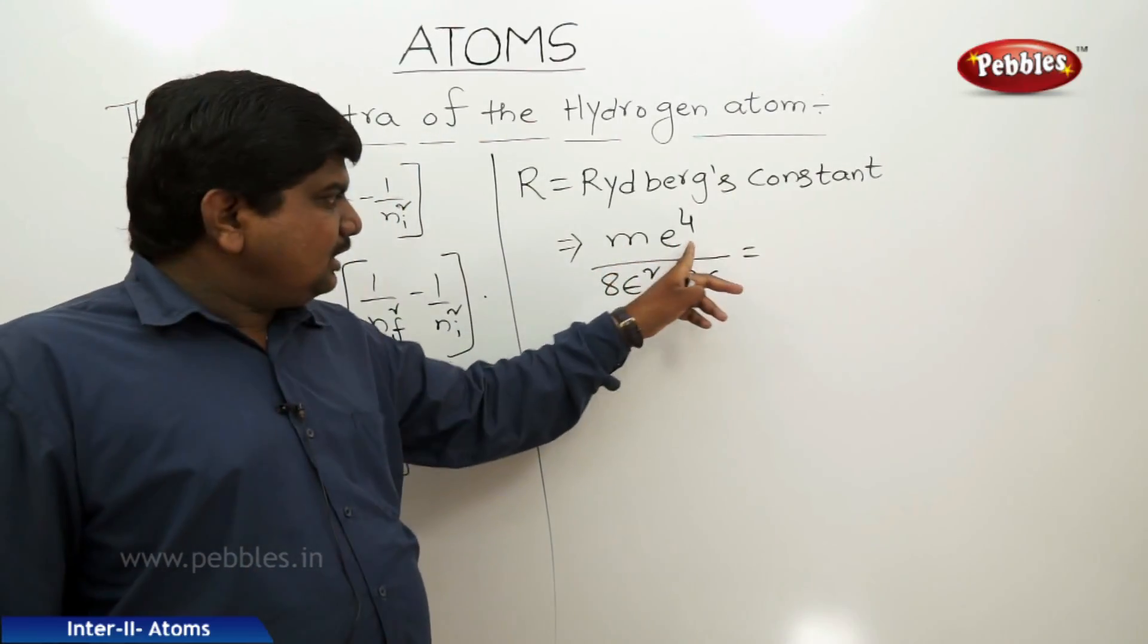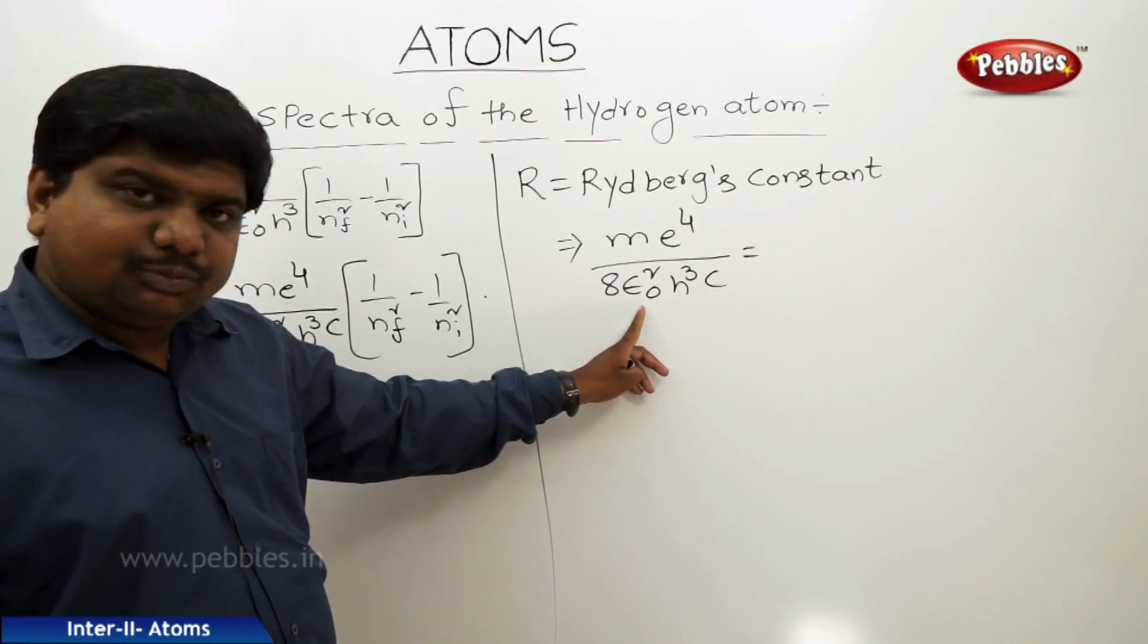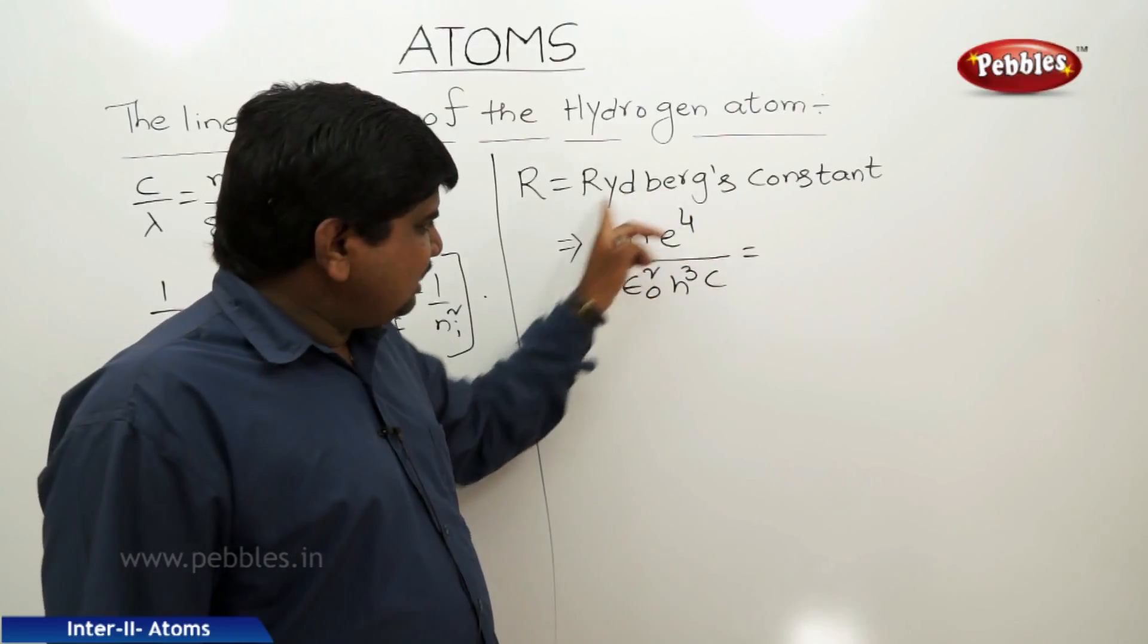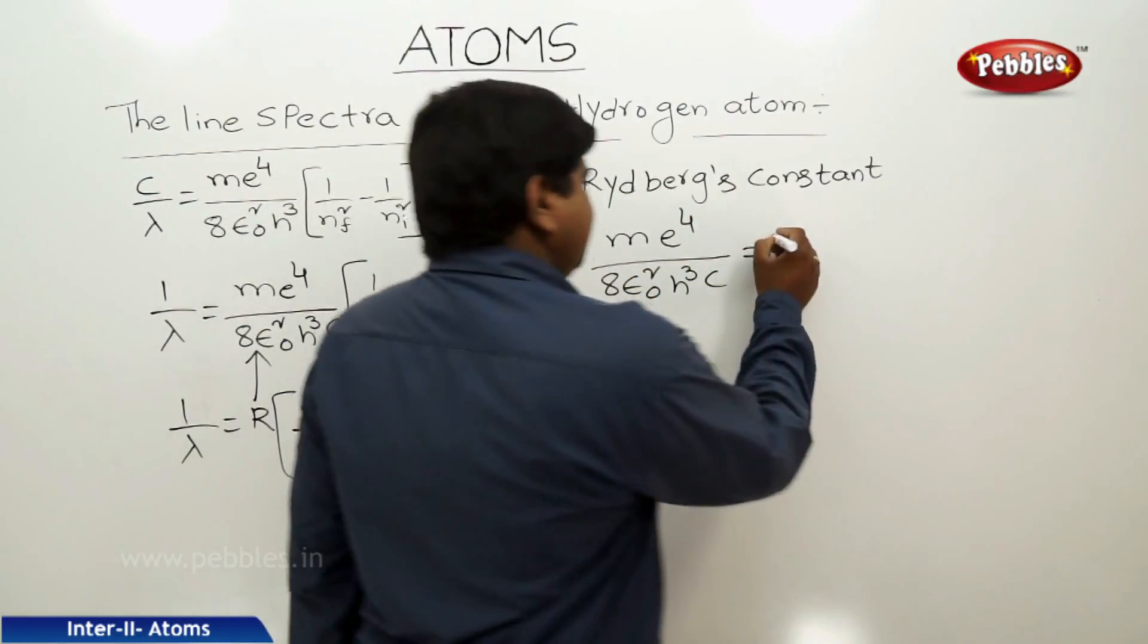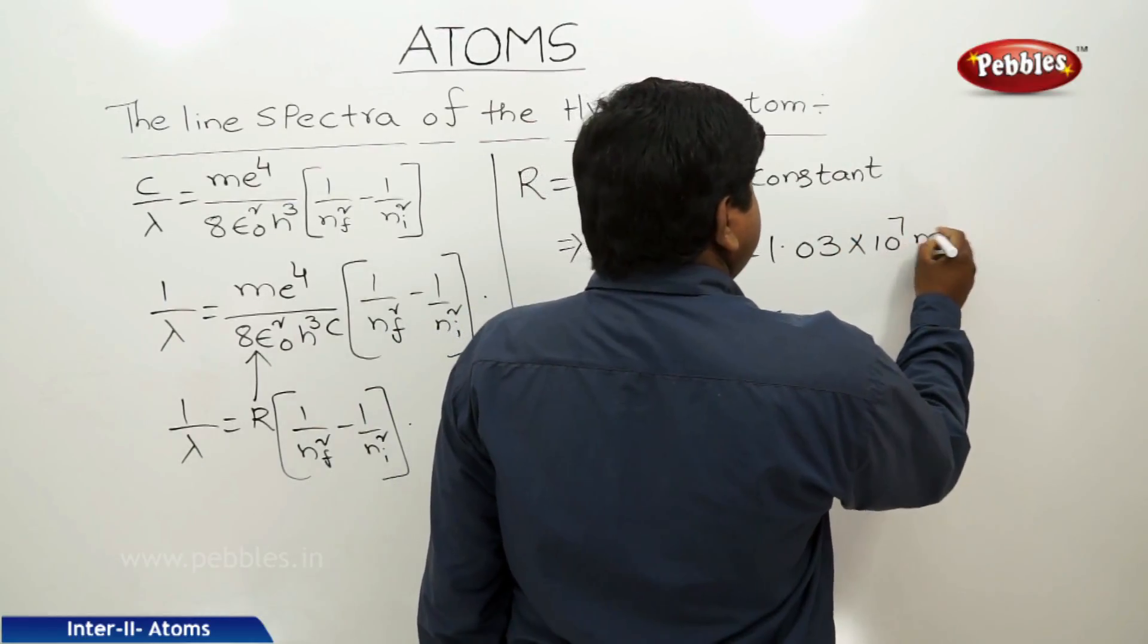Where m is mass of the electron, e is charge of electron, epsilon naught is 8.85×10⁻¹², h is Planck's constant, c is speed of light. By substituting all values we get 1.03×10⁷ meter inverse.